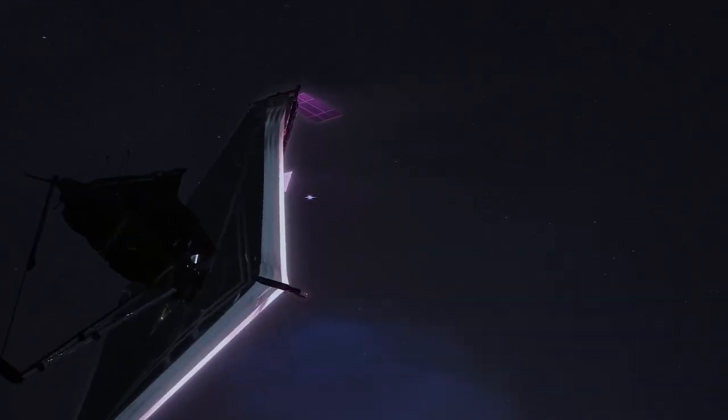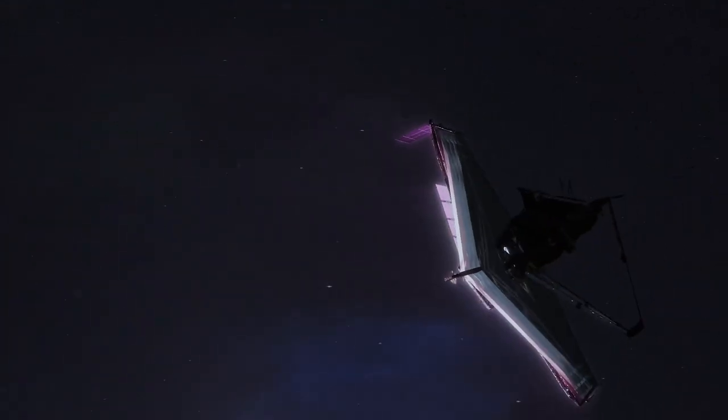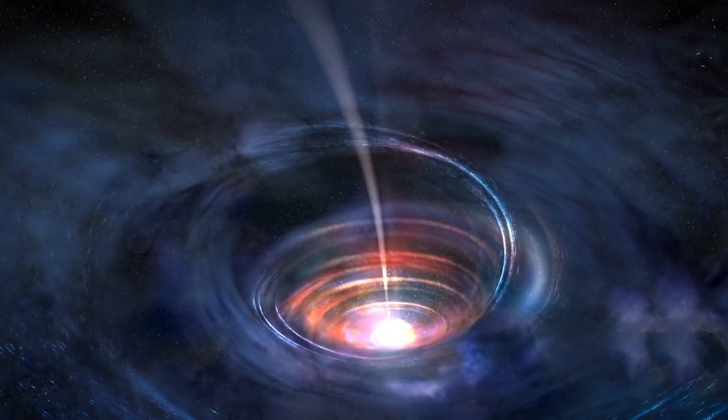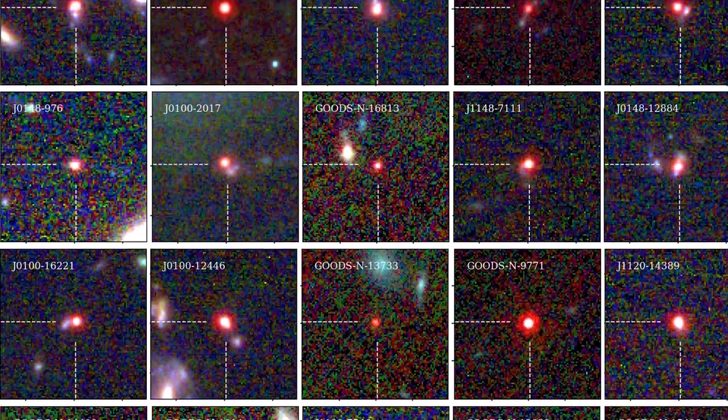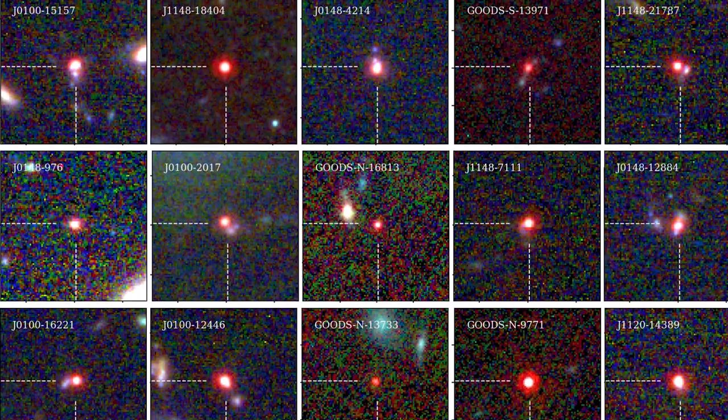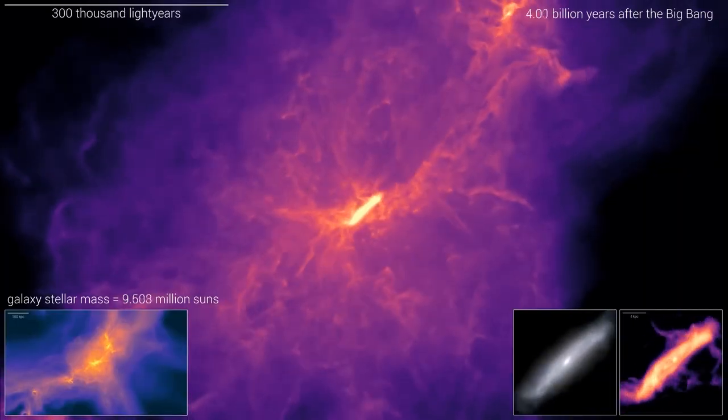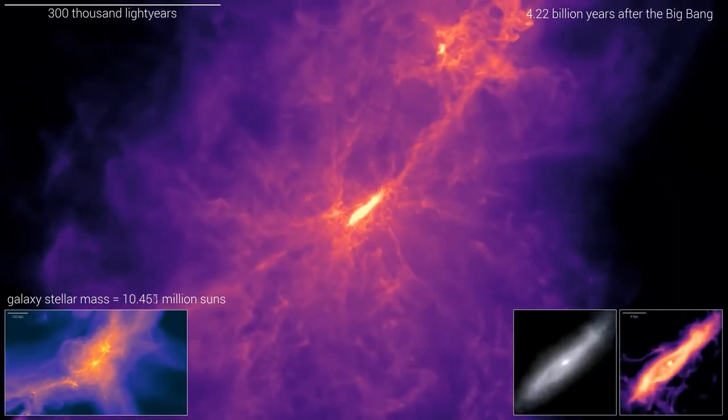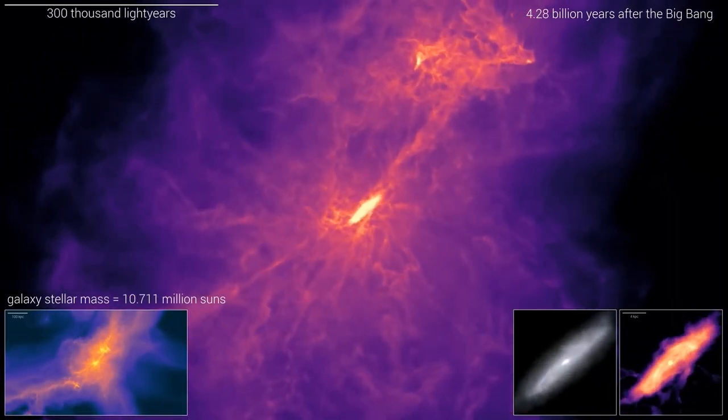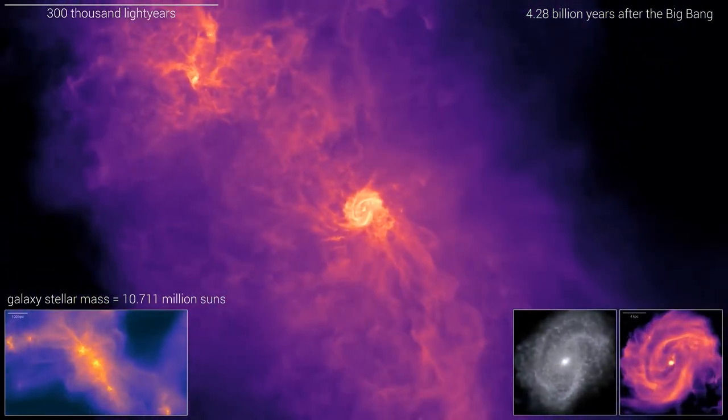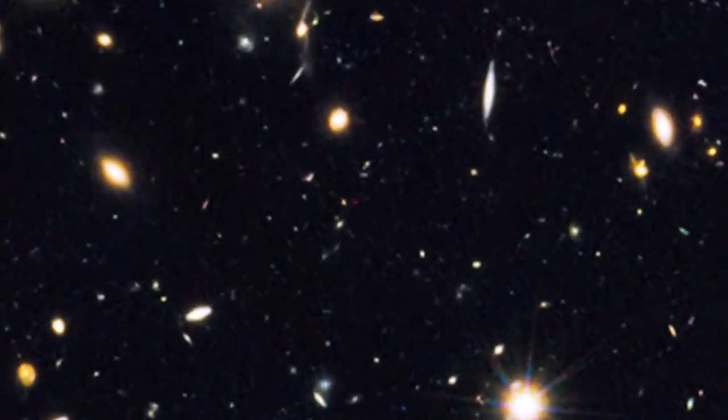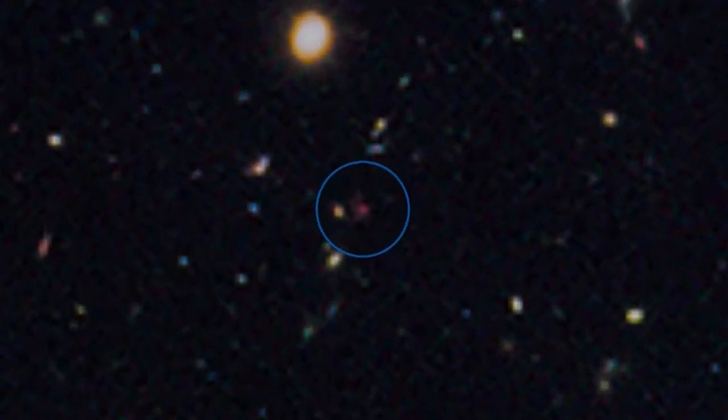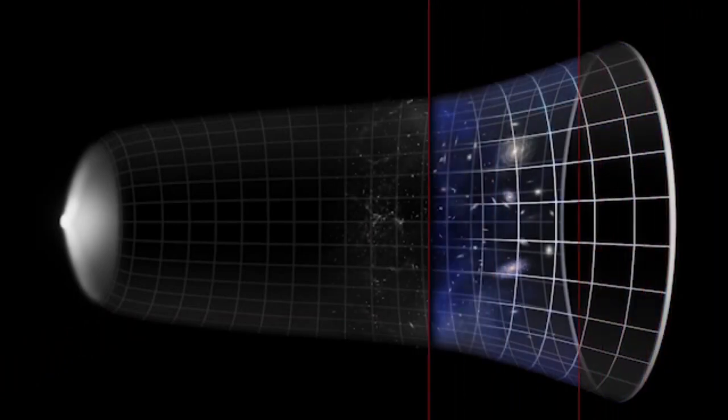However, the James Webb Space Telescope has unveiled remarkable discoveries that are reshaping our comprehension of the universe. One significant revelation is its continuous detection of larger and brighter galaxies formed just a few hundred million years post-Big Bang. This revelation is startling because previously, it was believed that galaxies took considerably longer to reach such size and luminosity. It's akin to stumbling upon fully matured trees in a recently planted forest, challenging our preconceptions about galactic evolution.